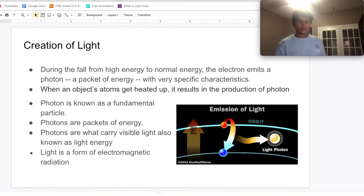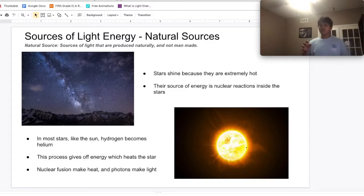Photons carry the visible light, which is a form of electromagnetic energy. So I have some natural sources of light energy. The source of light is nuclear reaction inside the stars, and then hydrogen becomes helium. The process sends out energy, which is used to heat the star. Nuclear fusion creates heat, and photons create light. Since the sun is a star, they have the same process of producing light.